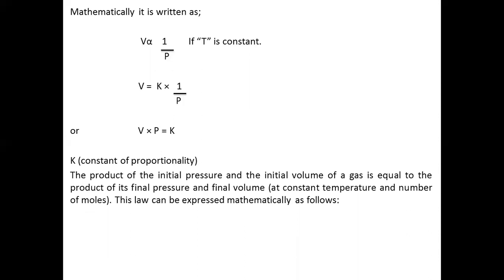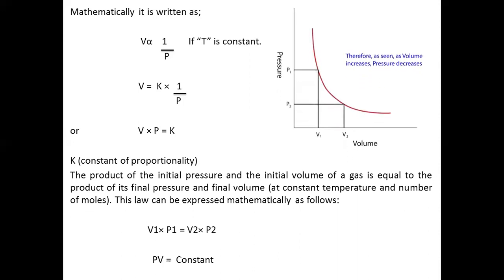Finally, we can say that V1 is the initial volume, P1 is the initial pressure, V2 is the final volume, and P2 is the final pressure. If we make a graph, it will be a hyperbolic graph showing the relationship between pressure and volume. That graph should be a curve. The equation of Boyle's Law is: V1 multiplied by P1 is equal to V2 multiplied by P2.